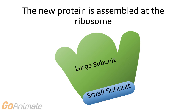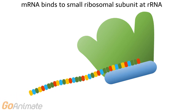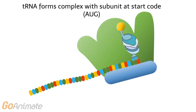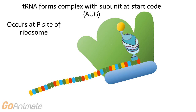In translation, the new protein is assembled at the ribosome. Ribosomes contain large and small subunits. mRNA binds to the small ribosomal subunit. Transfer RNA, or tRNA, forms a complex with the subunit at the start codon AUG. tRNA connects to the codon of mRNA. The three-base complementary sequence on tRNA is called the anticodon. tRNA also carries an amino acid, and connects to the ribosome at the P site.